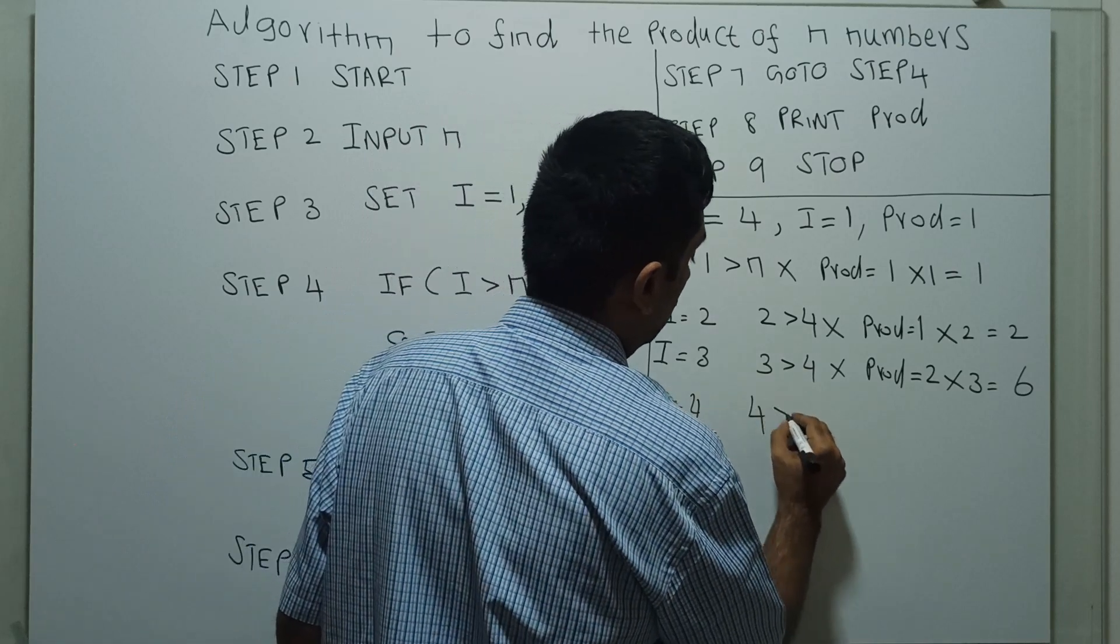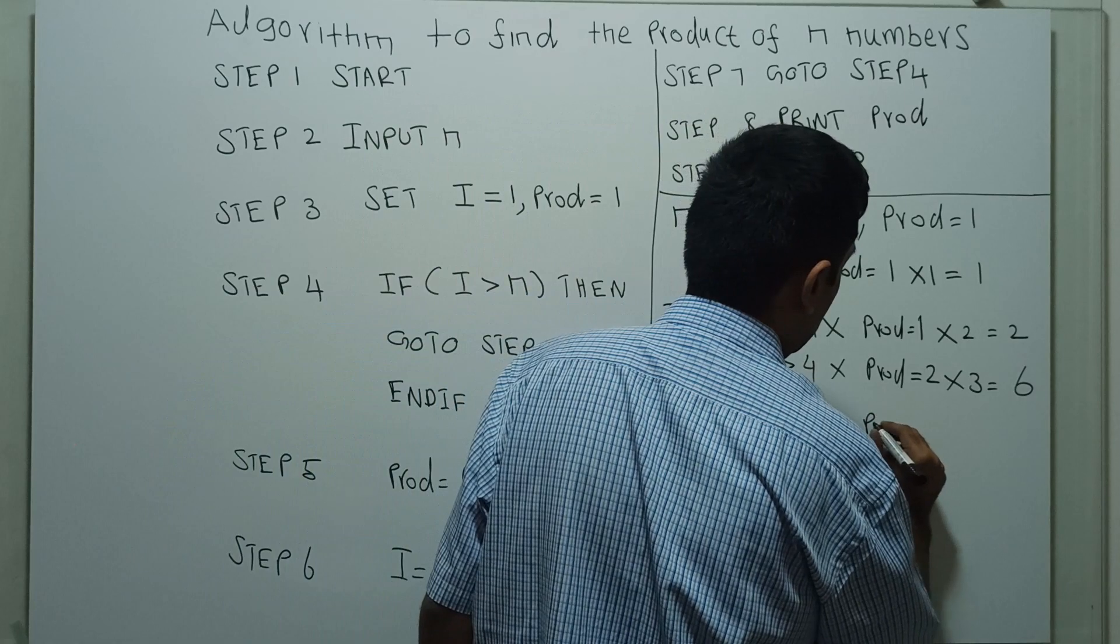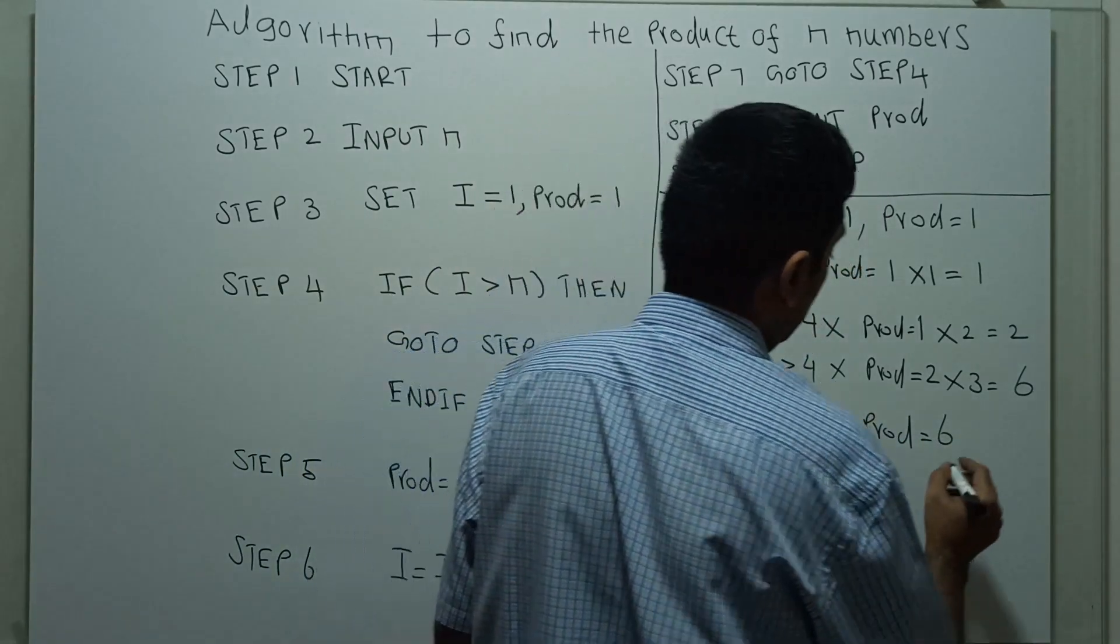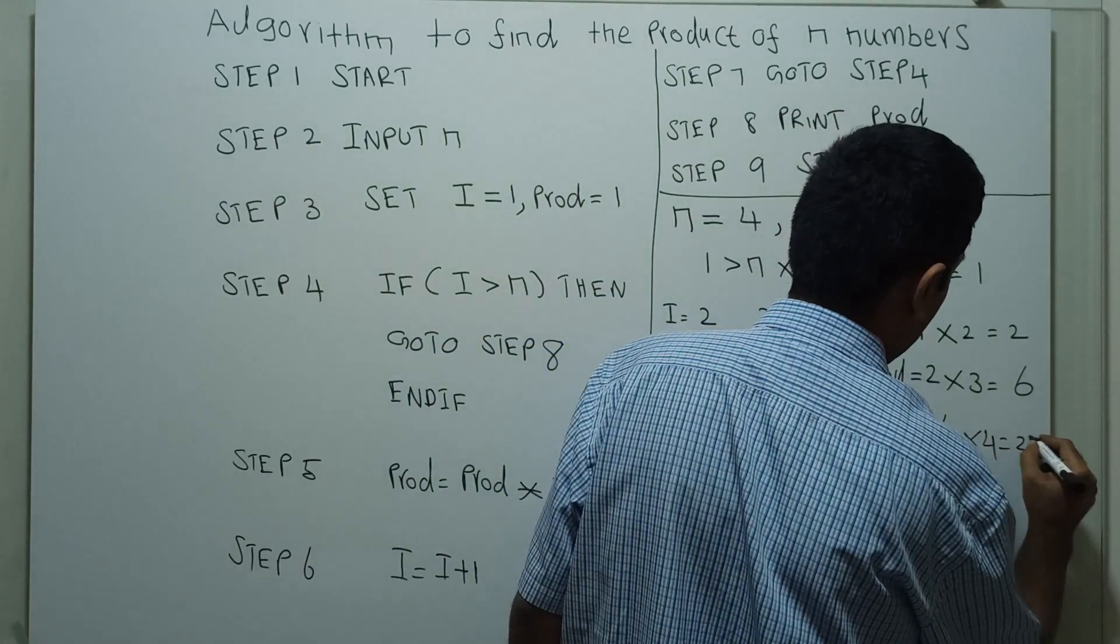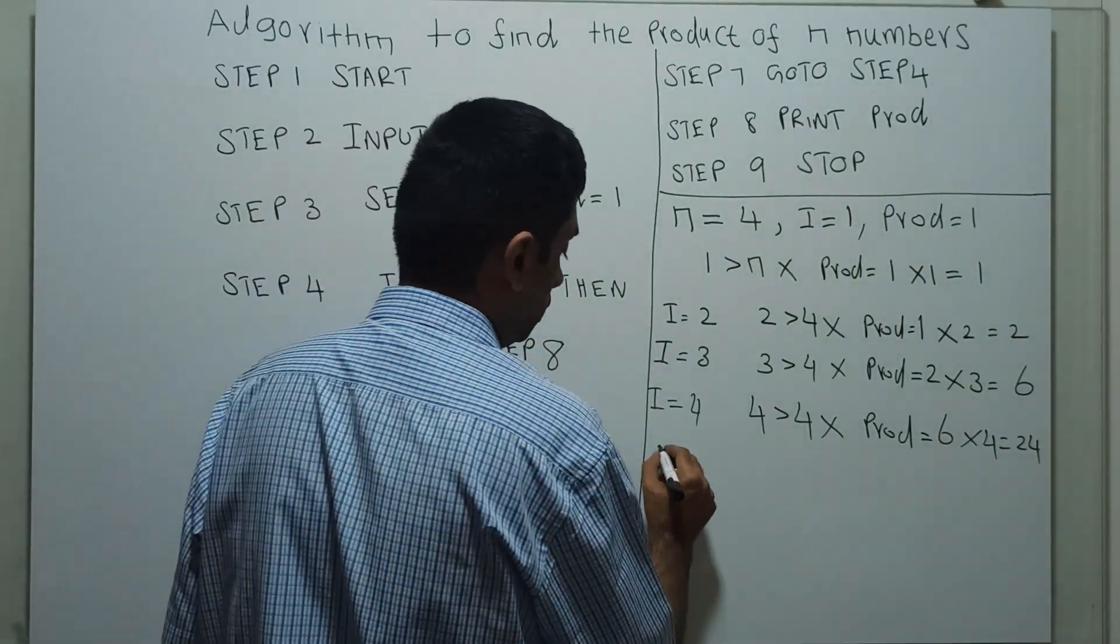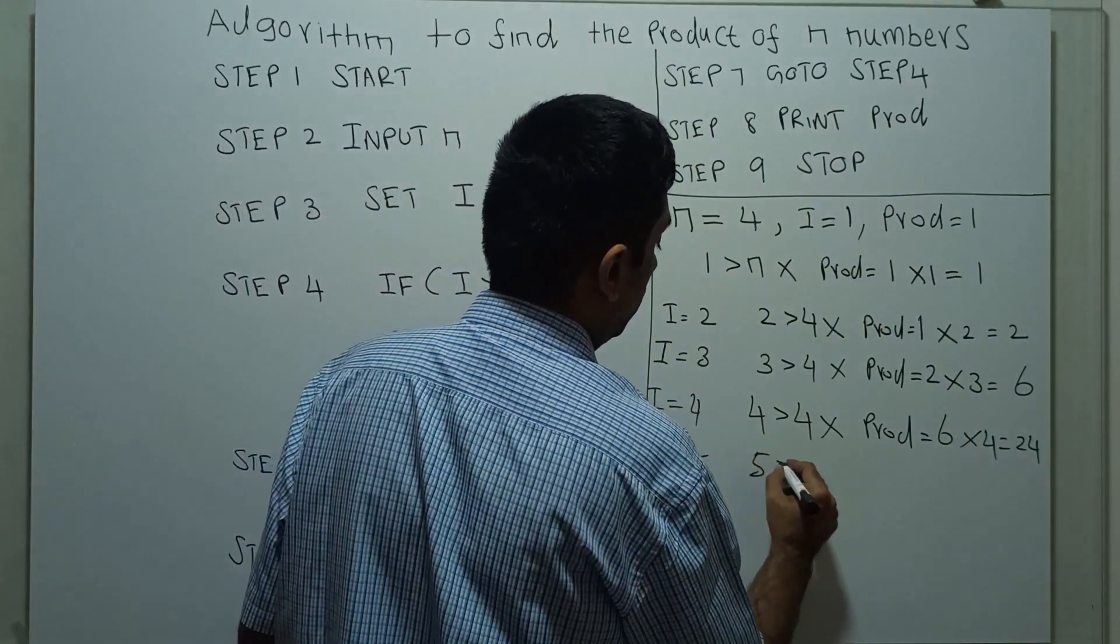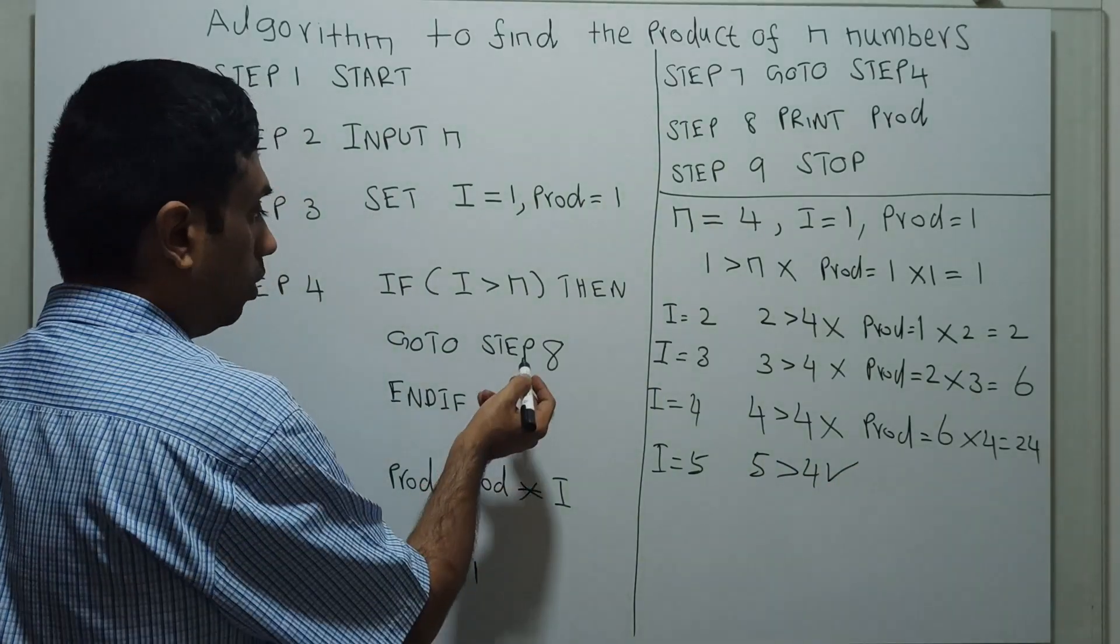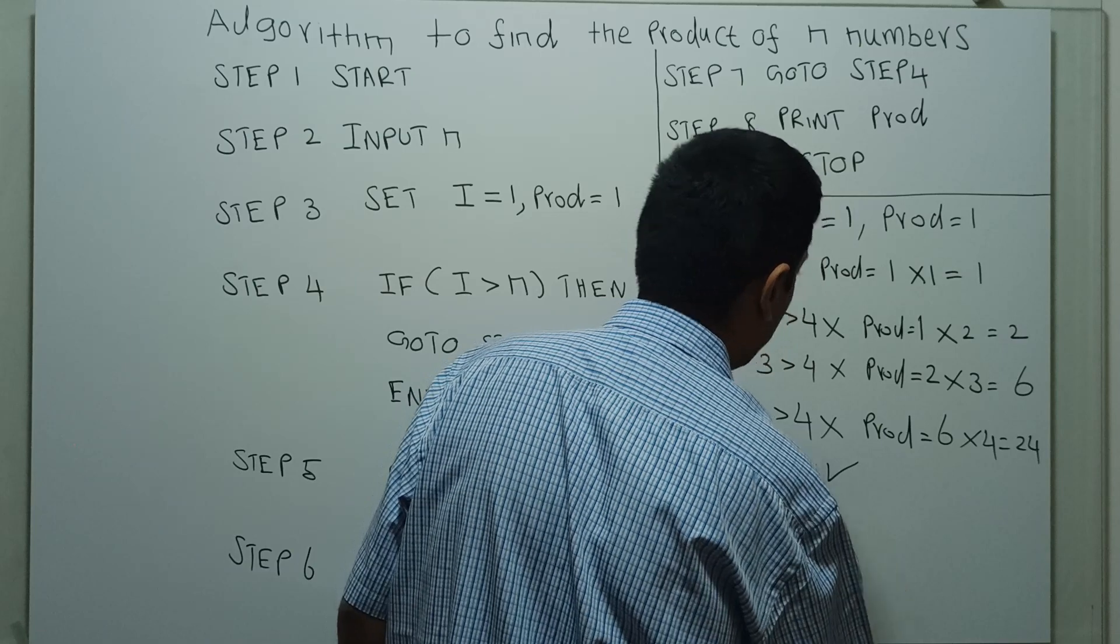Now checking if 4 greater than 4, which is true. Transfer control to Step 8. Print the product. What is our result? Result equals 24.